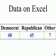The Democrats had 48%. The Republicans had a little bit less at 45%. And other candidates such as the Green, the Independents, and other write-ins had 7% of the votes.